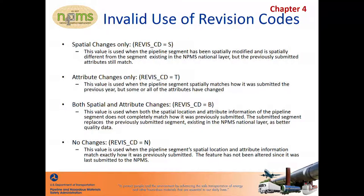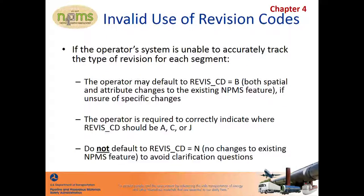If the submitted pipeline has spatially changed because it includes a section of new construction, such as a newly constructed reroute that did not previously exist, the new constructed reroute should be submitted as a separate segment. This allows the operator to correctly attribute the reroute with revision code C for new construction. The remaining sections of the pipeline representing the same pipeline currently in the NPMS national layer would be populated with revision code values S or B. This provides a clearer picture of the pipelines and the changes that occurred since the previous data submission. The revision code for no changes should only be used when the spatial location and attribute information has not changed for the individual pipeline segment and matches exactly to the previously submitted pipeline that is in the NPMS national layer. Operators should also never default to revision code N for no changes — for example, if a pipeline has a drastic spatial change due to improved re-GPS data and it is attributed as a no change, the submission will be held back from further processing until clarification is received.